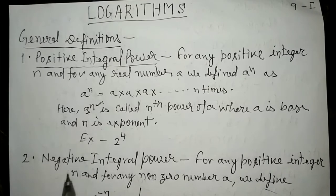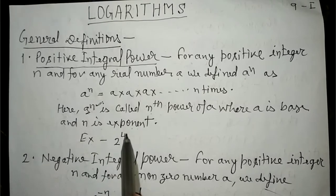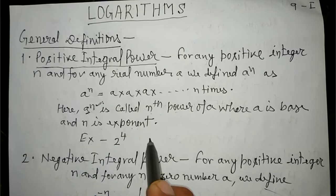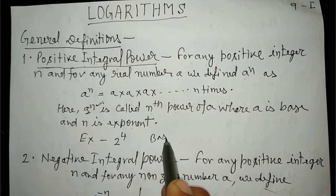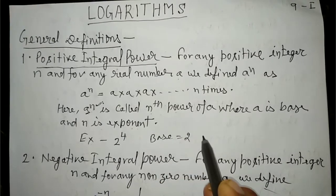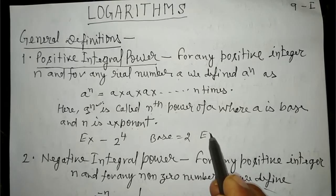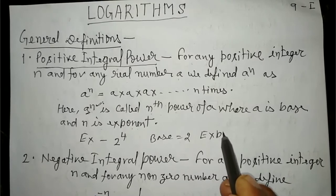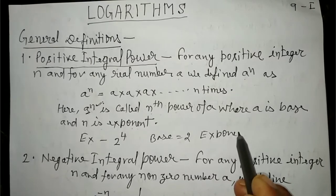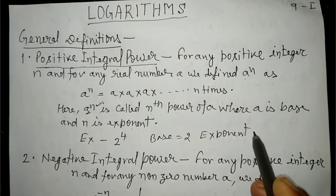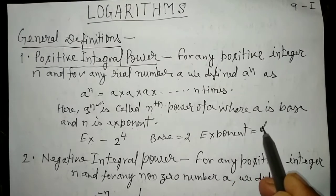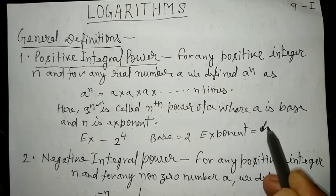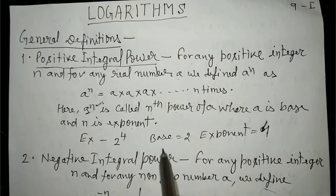Example: 2 to the power 4 — इसमें base हो जाएगा 2 और exponent हो जाएगा 4।